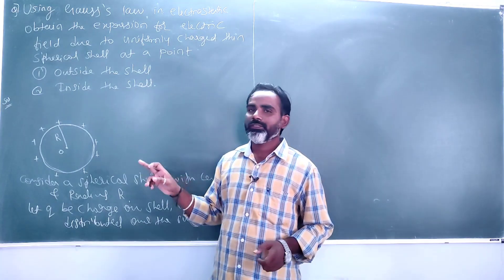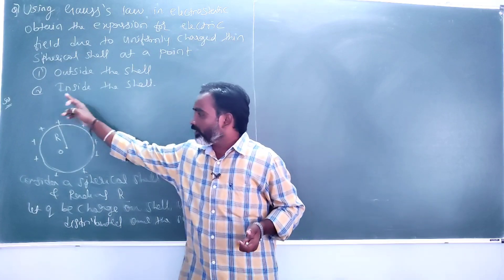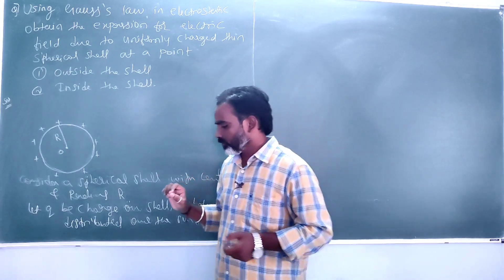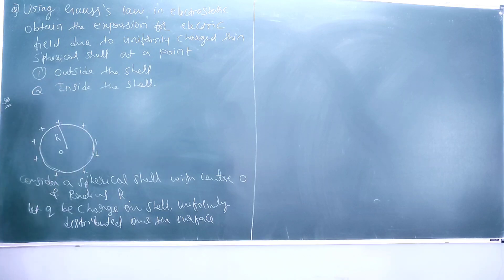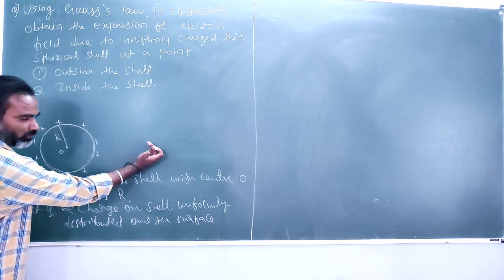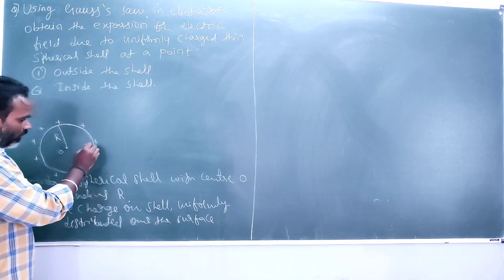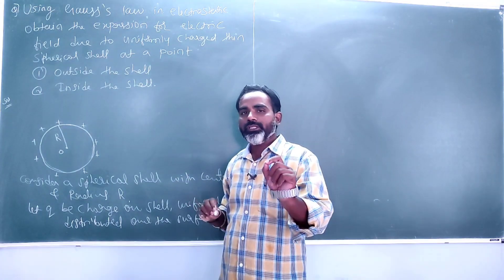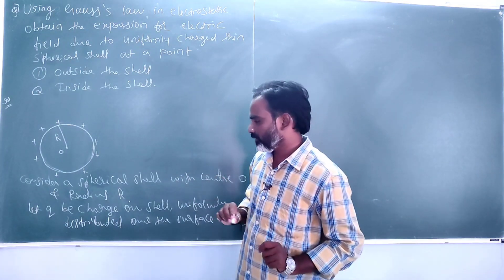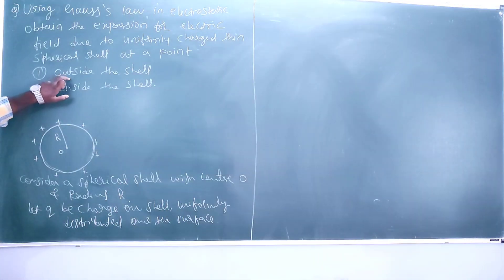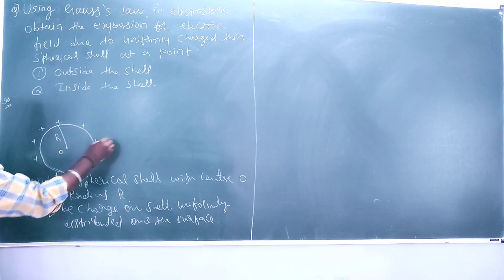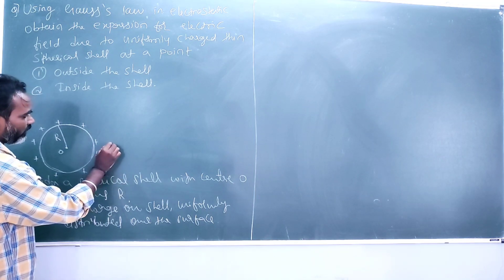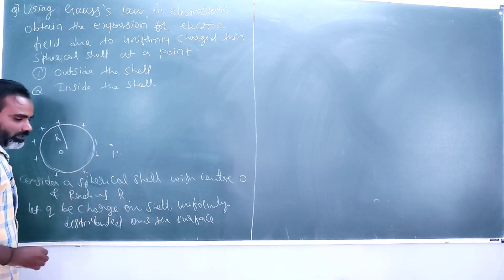When it is charged, it produces an electric field around it. Since the charge is positive, the electric field is radially outward. I am going to find out the electric field outside the shell. Let point P be a point outside the shell.